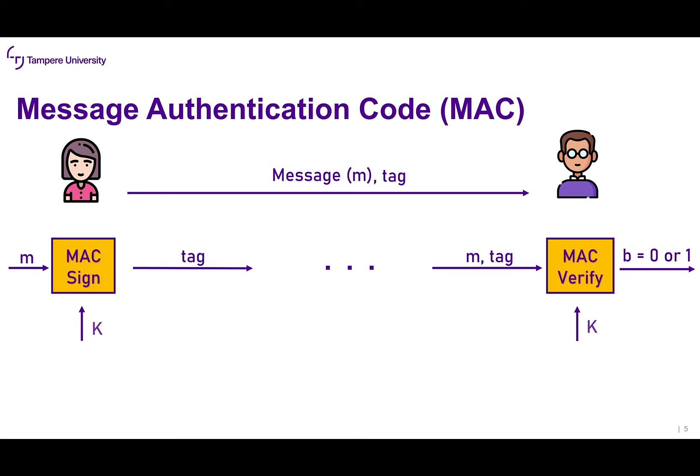The tag is such that when passed along with the original message to the verification algorithm, it signals success or failure. The key idea is that it should be hard for the adversary Eve to produce a valid tag unless it was obtained from the MAC algorithm using the correct key K. In other words, Eve cannot produce a valid result unless she has access to the secret key K that Alice and Bob are sharing.